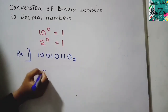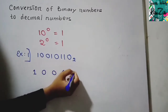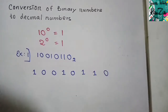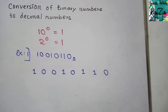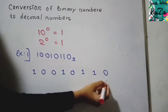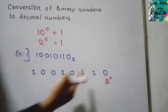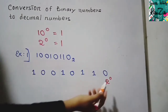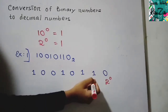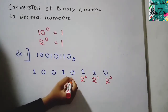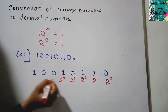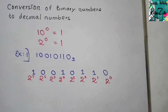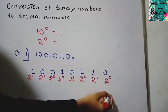First, write out the digits with a gap. Then, starting from the rightmost digit, assign powers of 2: the rightmost digit gets 2 to the power 0, then going left: 2 to the power 1, 2 to the power 2, 2 to the power 3, 2 to the power 4, 2 to the power 5, 2 to the power 6, and 2 to the power 7.